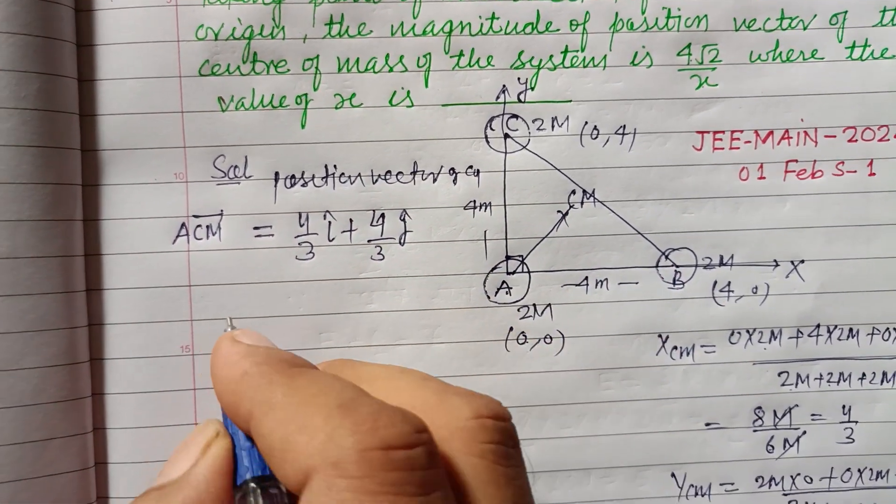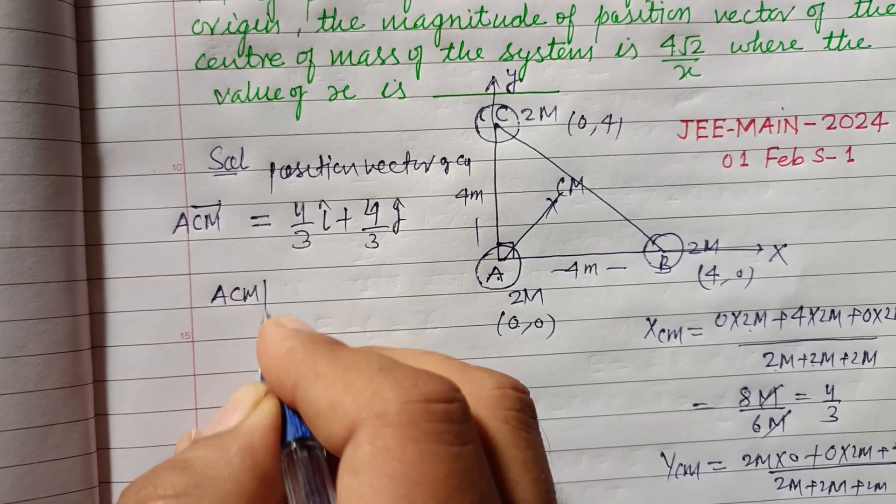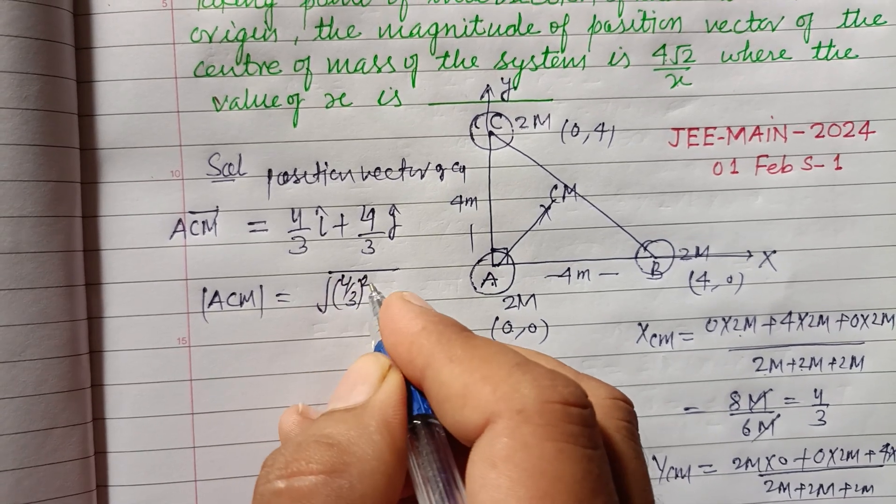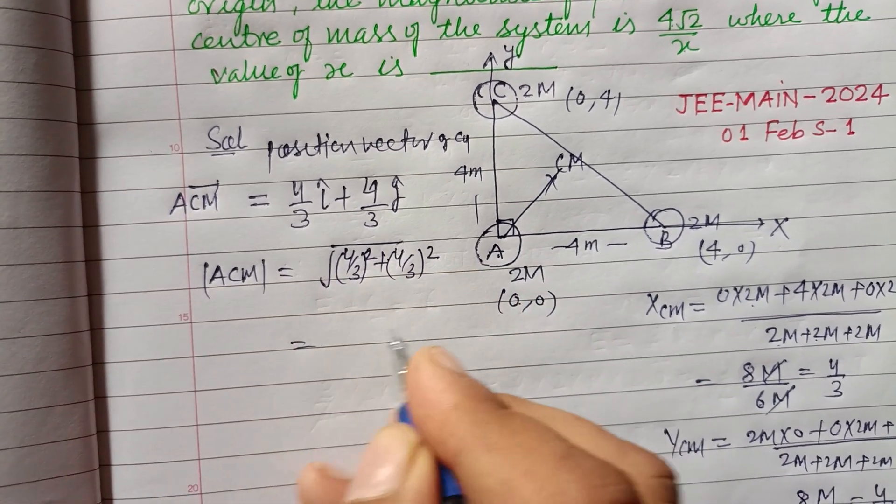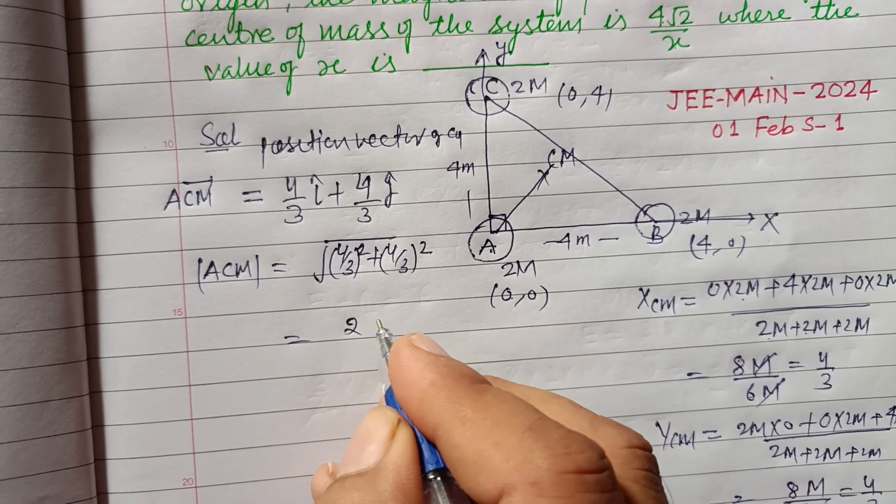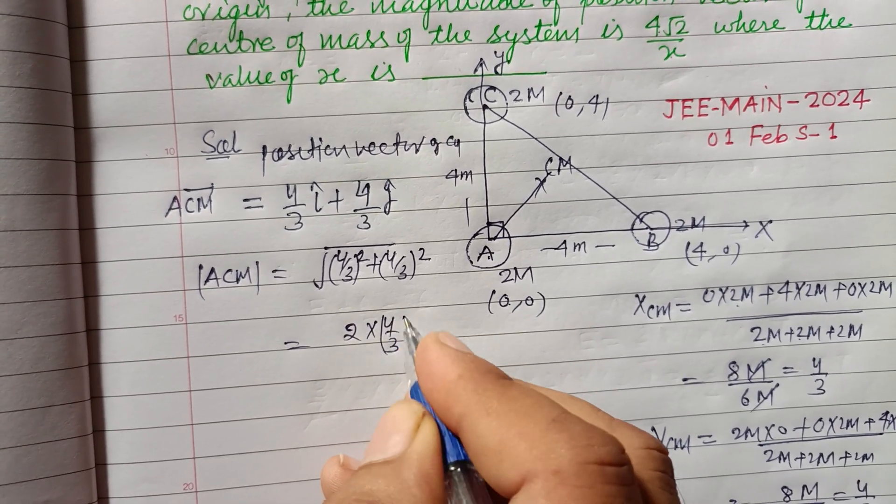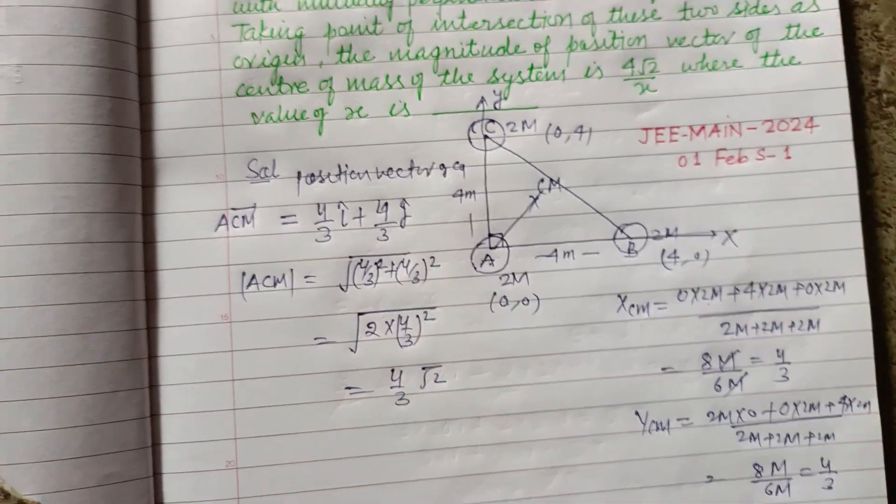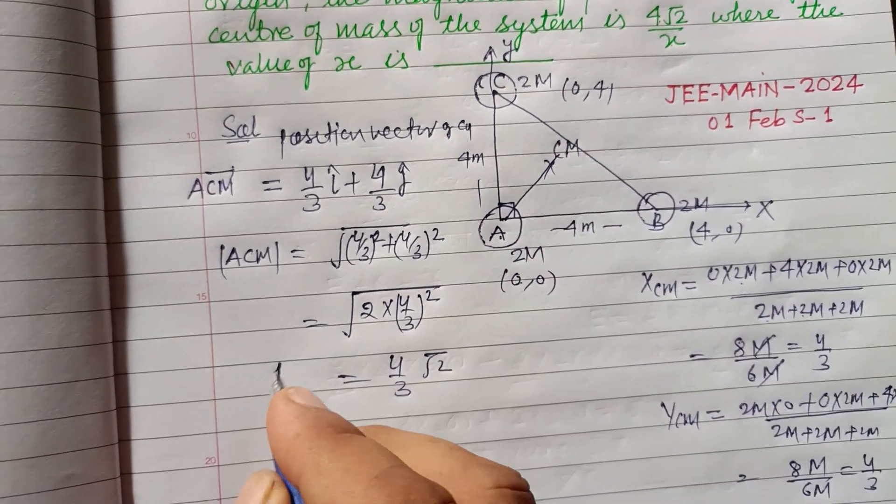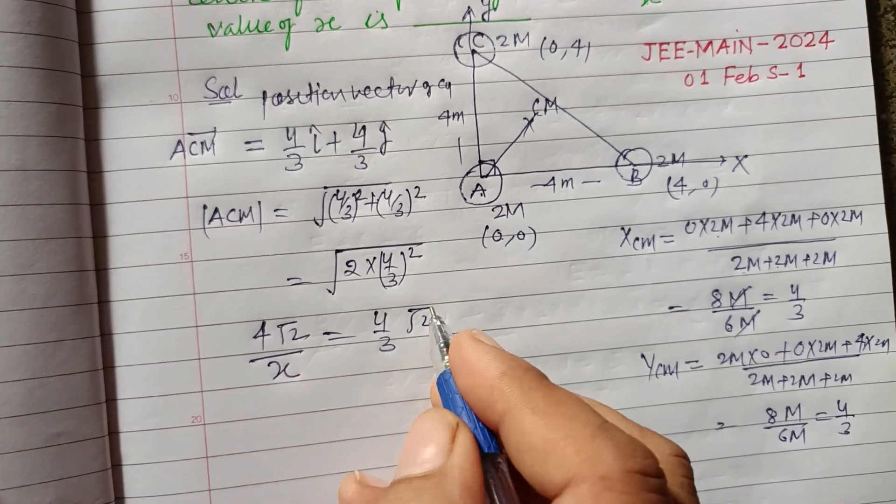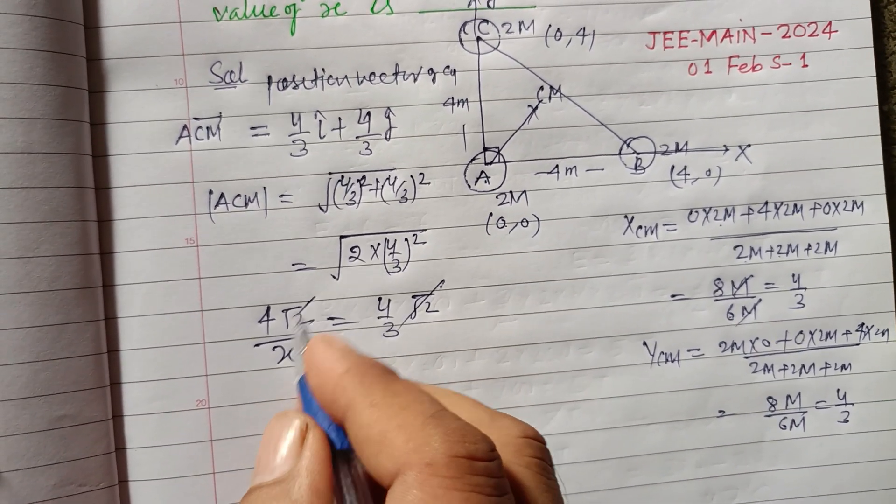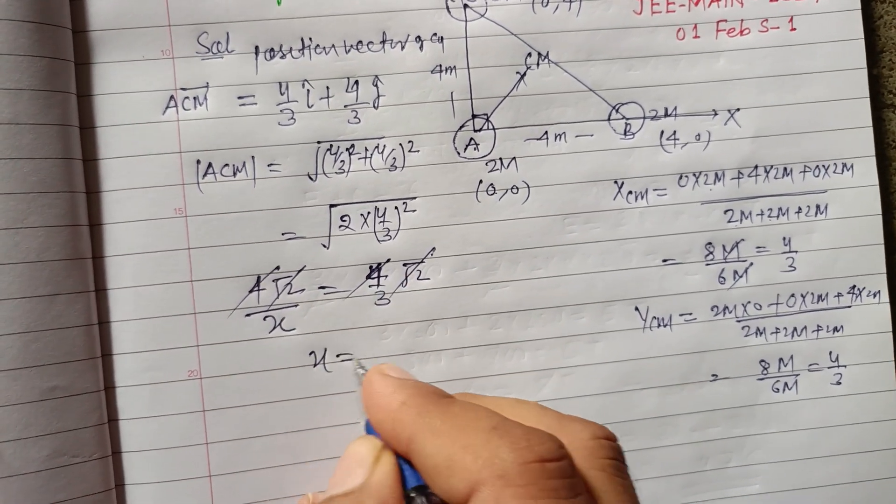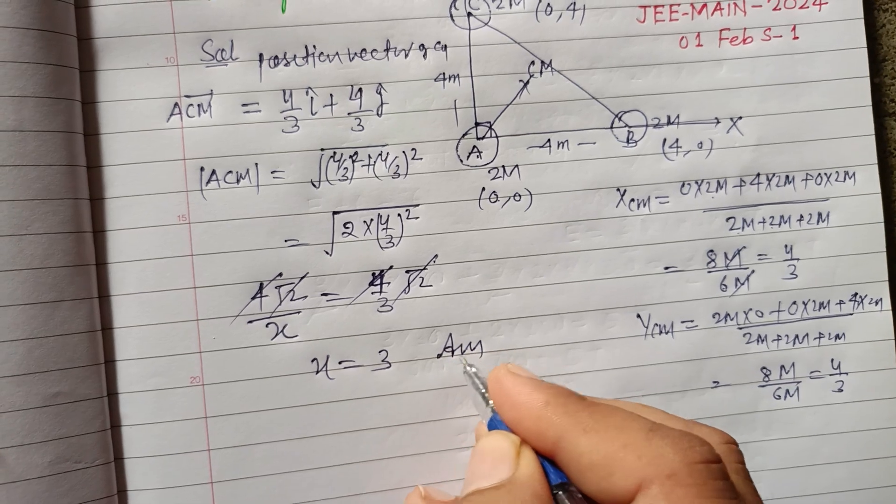And its magnitude equals √[(4/3)² + (4/3)²], so this is √[2×(4/3)²] = (4/3)√2. And it is given equal to 4√2/x. So √2 and √2 cancel, 4 and 4 also cancel, therefore x equals 3. So x equals 3 is the correct answer of this question.